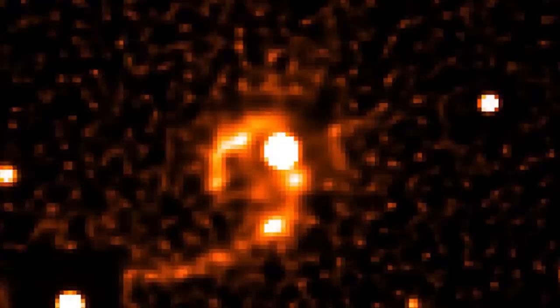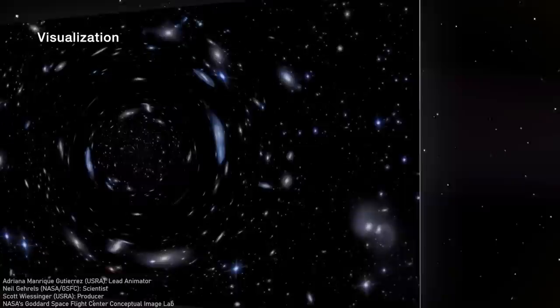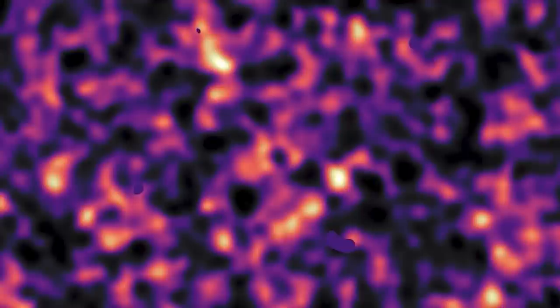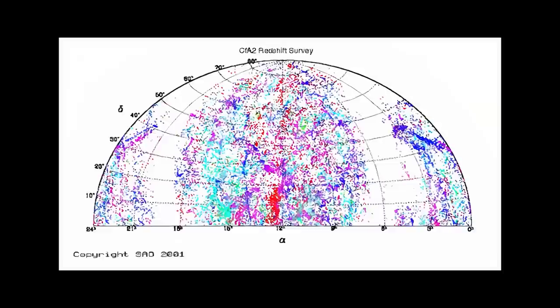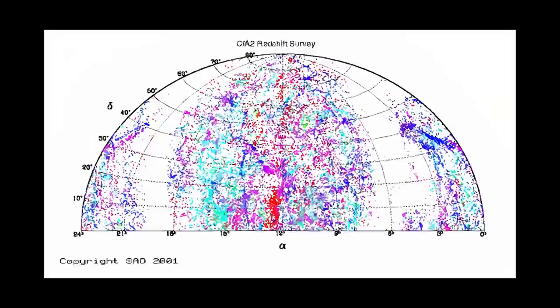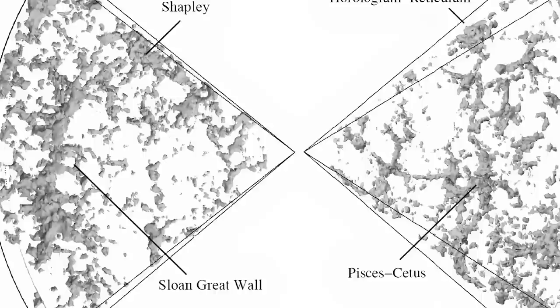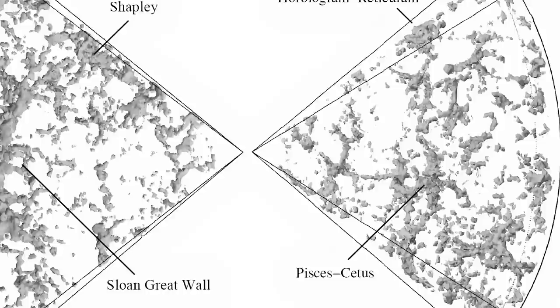As time went on, more pieces of evidence began to fall into place, strengthening the case for dark matter. In the 1980s, astronomers observed a phenomenon known as gravitational lensing. This happens when the gravitational pool of massive objects, like galaxy clusters, bends the light from background objects such as distant galaxies. The way this bending occurred supported the idea that dark matter was present in these clusters, acting as an invisible gravitational lens. Another piece of the puzzle came from the study of cosmic microwave background, the afterglow of the Big Bang. Measurements of the CMB revealed a universe that was clumpier and more filamentous than what would be expected if it were solely composed of visible matter.